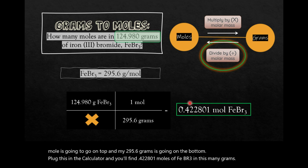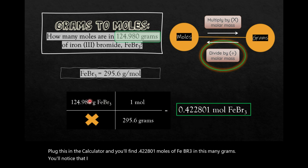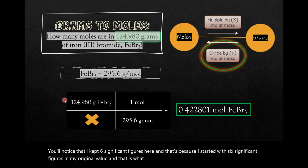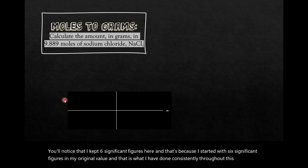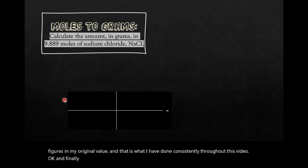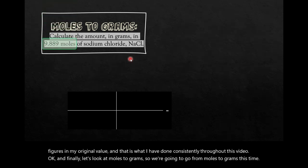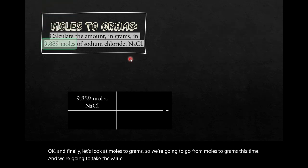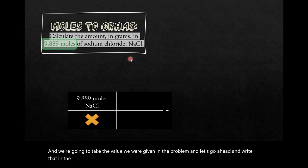You'll notice that I kept six significant figures here, and that's because I started with six significant figures in my original value, and that is what I have done consistently throughout this video. Okay, and finally, let's look at moles to grams. So we're going to go from moles to grams this time, and we're going to take the value we were given in the problem, and let's go ahead and write that in the upper left-hand corner. Nothing goes at the bottom.